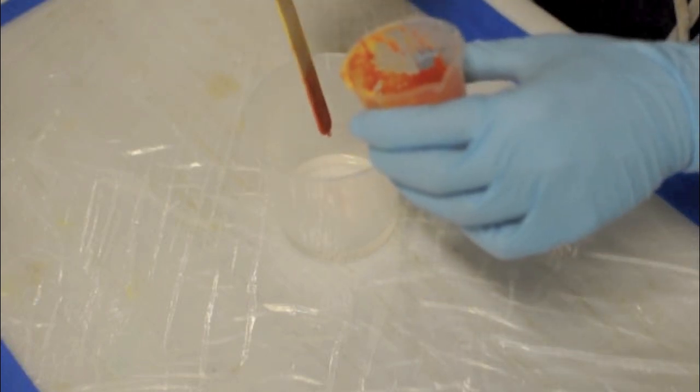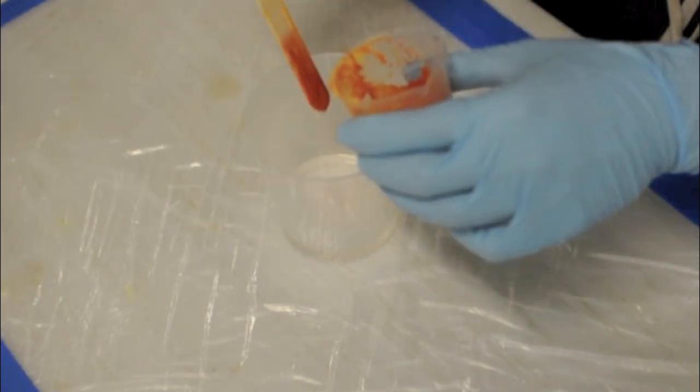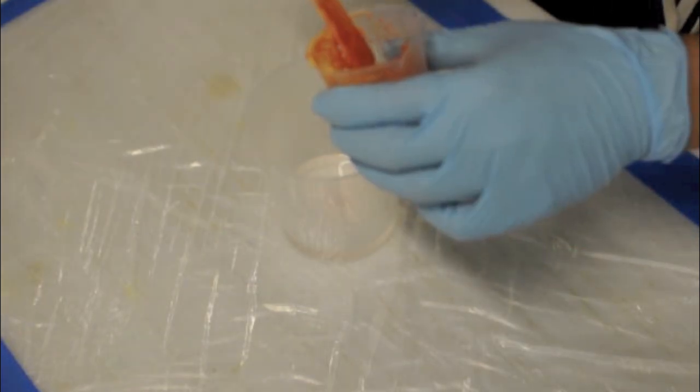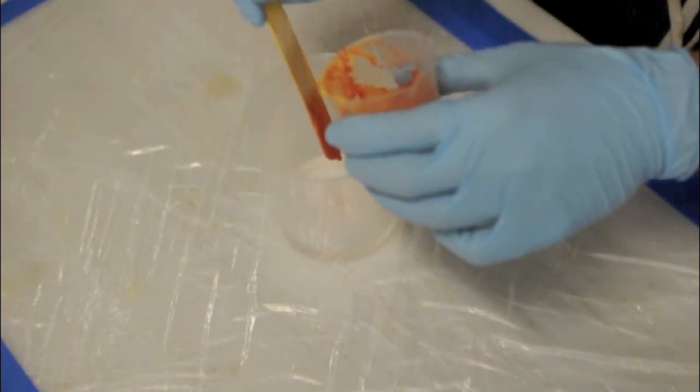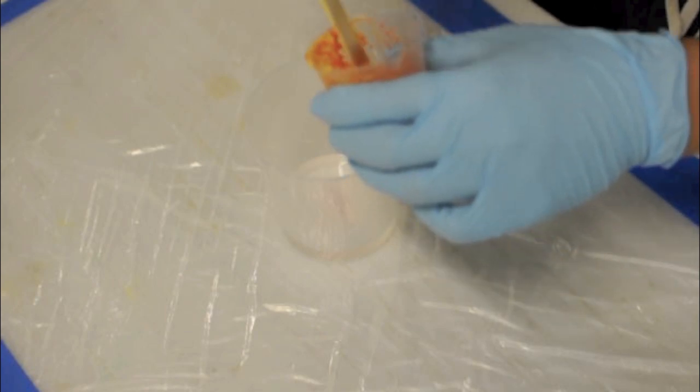Because it only takes a small amount of pigment to color your resin, it is sometimes smart to mix tint to the desired color prior to adding it to your master batch.